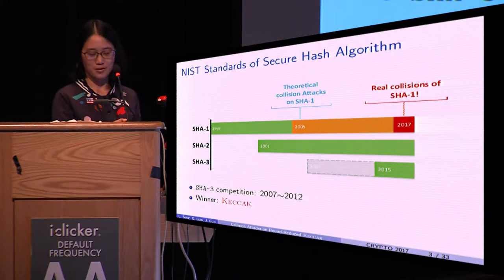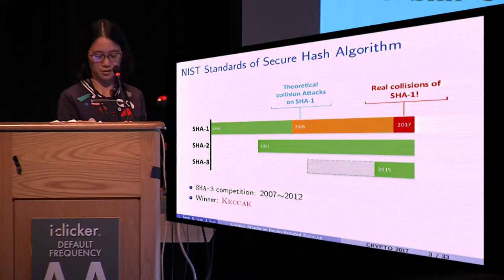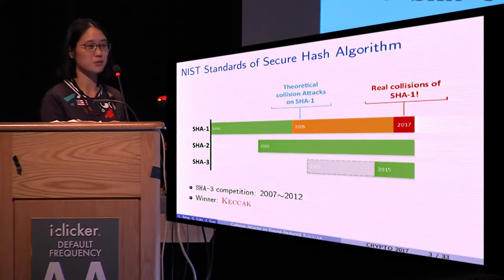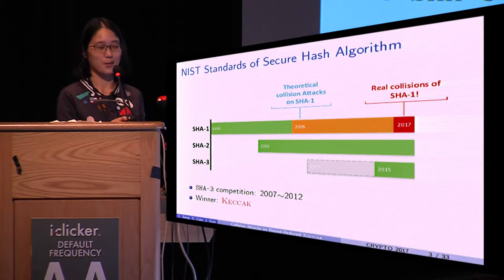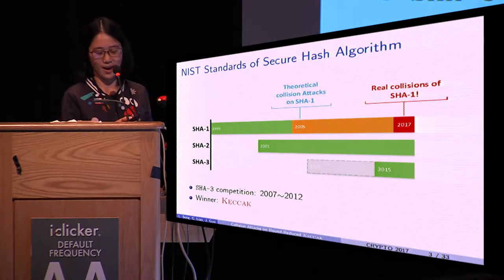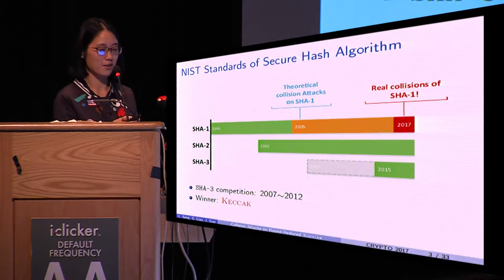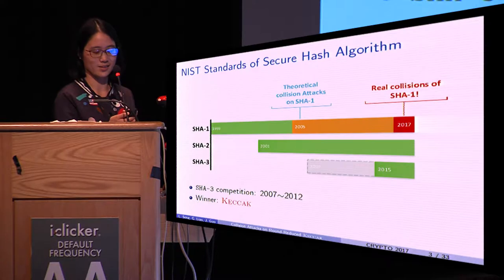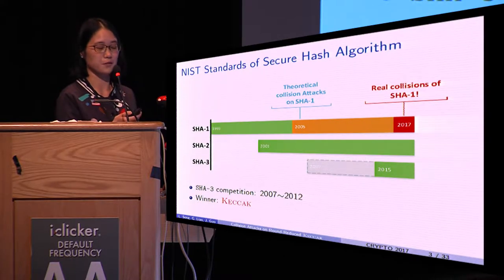To develop a new cryptographic hash function, NIST opened a public competition in 2007. The competition received dozens of submissions. After years of evaluation, KECCAK was selected as the winner and standardized in 2015.